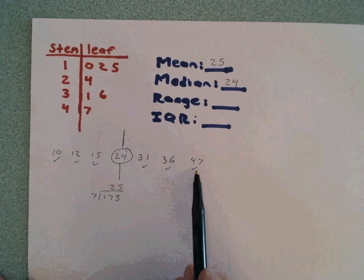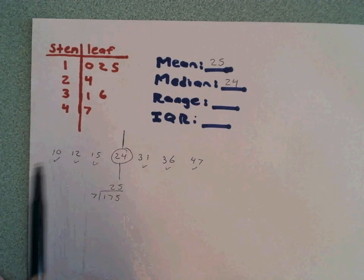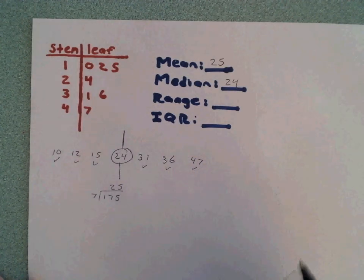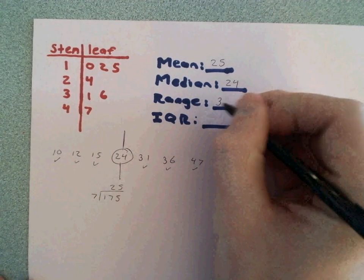The range is just the high number, 47, minus the low number, 10. 47 minus 10 will give us 37.